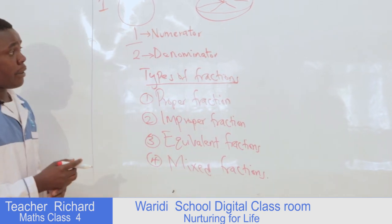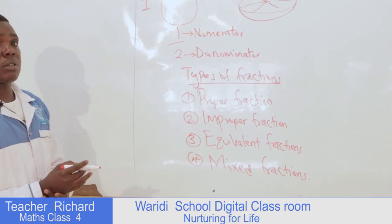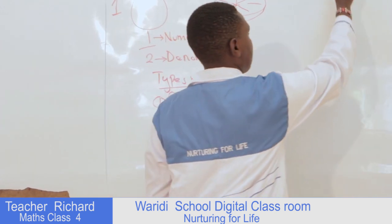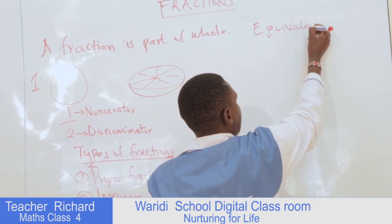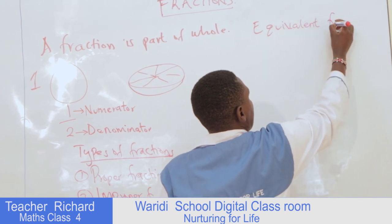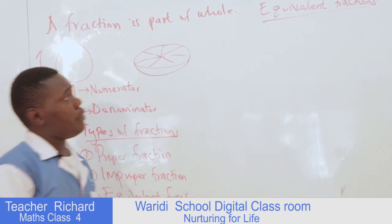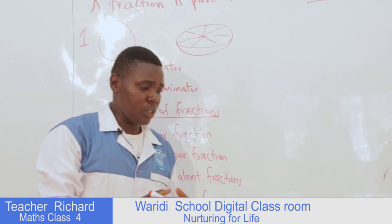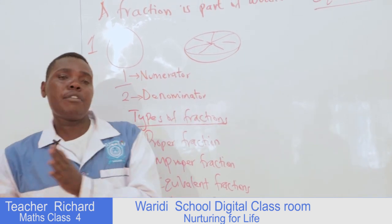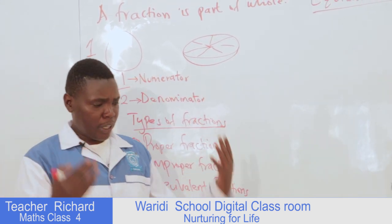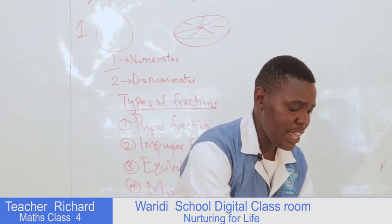My dear boys and girls at home, we will start with equivalent fractions. From the word 'equivalent,' it suggests that a fraction is equal to another fraction. So if you find a fraction that is equal to another fraction, we call those fractions equivalent fractions, meaning they are equal.